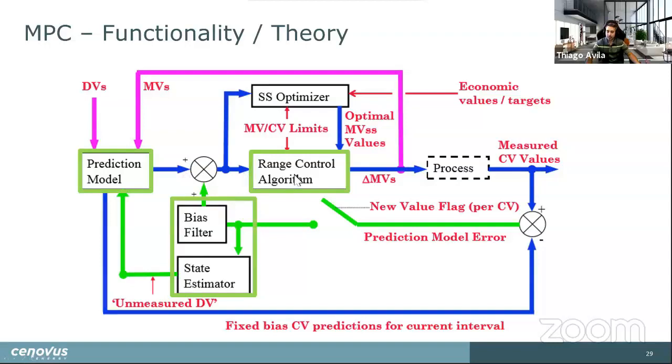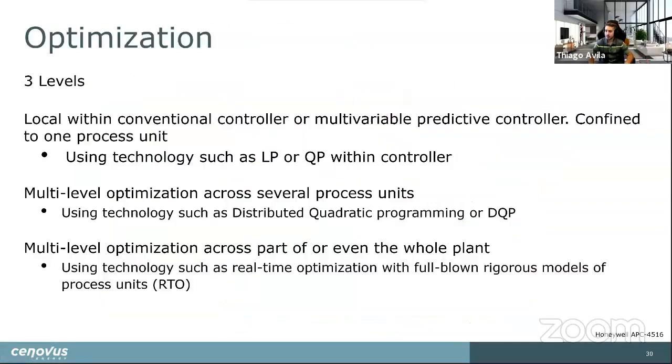So that was mainly this prediction model part and then this unmeasured disturbance state estimation and biasing. So now we've got a pretty good prediction of where we're going to be and where we want to be. We put it through that range control algorithm and it tells us what moves we should make to get back into control, but we haven't optimized anything. All we've got is we've got the plant within our operating control limits.